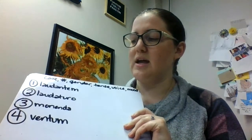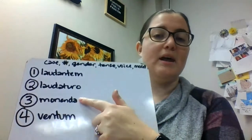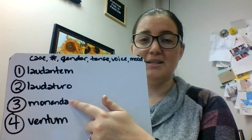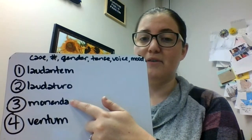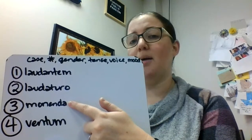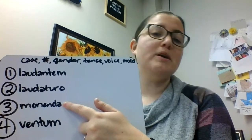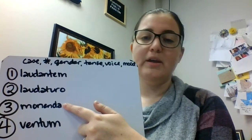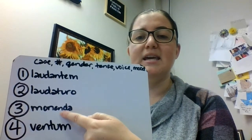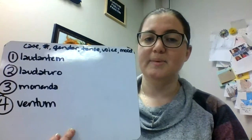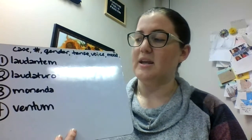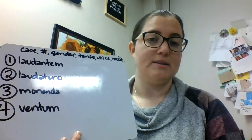On to number three: monenda. There are a number of options for this 'a' ending and I don't know because we don't have context. So it could be nominative singular feminine, ablative singular feminine, nominative plural neuter, or accusative plural neuter. Let's go nominative, singular, feminine. Now we have that 'nd' — that's our 'butter pecan deus' participle — so that tells us this is nominative, singular, feminine, future passive participle.